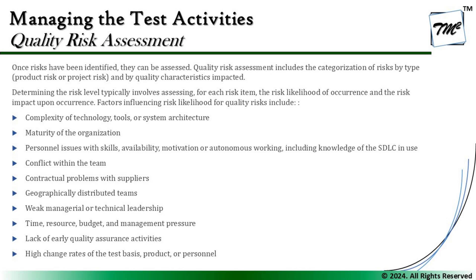When we use the word quality risk, we are talking about product risk. The factors which influence the likelihood for the product or quality risk include: complexity of the technology, tool or system architecture; maturity of the organization; personal issues with skills, availability, motivation, or autonomous working; and knowledge of the SDLC. All these factors are self-explanatory — they relate to the chances of a risk occurring in a particular product, based on how complex the system is and the expertise of the people working on it.